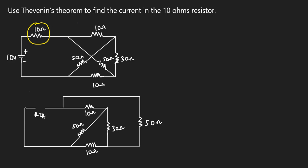We start by solving for the Thevenin resistance. I will redraw the circuit, and when I do so I will short-circuit the voltage source — so there is no voltage source in the redrawn circuit. I will also open-circuit where the resistor was, marked as R_T. I've redrawn the connections so that the 50 ohms is clearly visible, making the calculations easier.